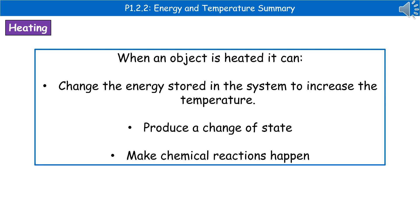When we have an object and heat it, we could see one of three things or a combination of them. Firstly, we could see a change in the energy stored in the system to increase the temperature. Secondly, we could get a change of state: solid to liquid, liquid to gas, etc. And we could see chemical reactions occurring.